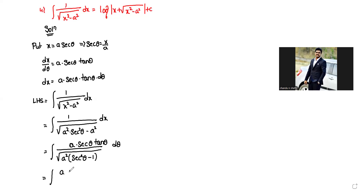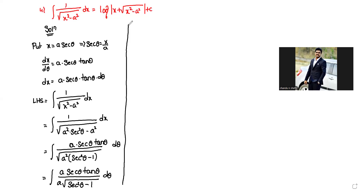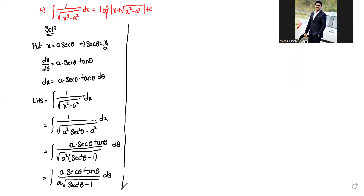In the place of dx, taking a into secant theta into tan theta into d theta. So we have integral a secant theta tan theta by square root of a square of secant square theta minus 1 into d theta. We should observe that 1 plus tan square theta equals secant square theta, so tan theta equals square root of secant square theta minus 1.